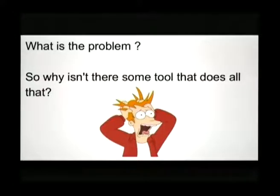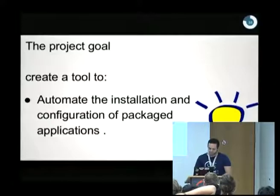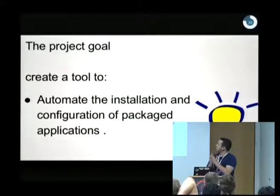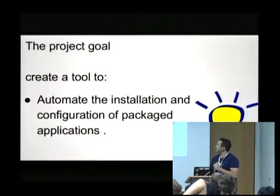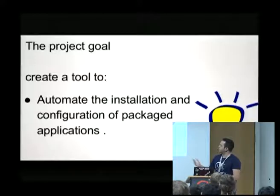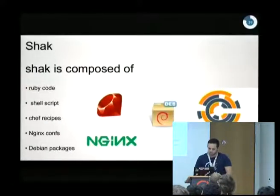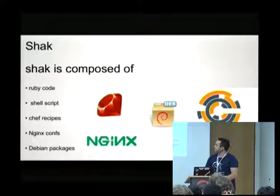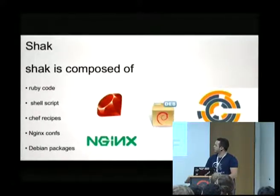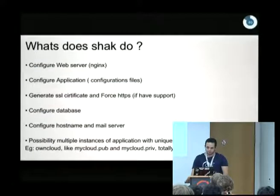The project goal is to create a tool to automate the installation and configuration of packaged applications. Shaq is composed of Ruby code, shell scripts, Chef recipes, nginx configs, and Debian packages of course.